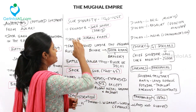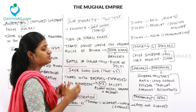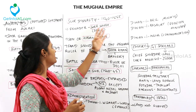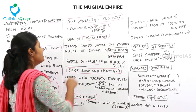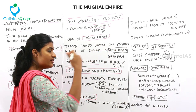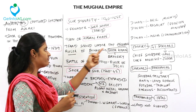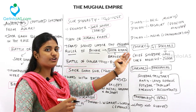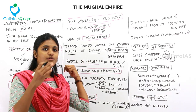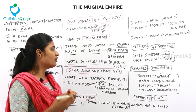The Sur dynasty ruled from 1540 to 1555, about 15 years. It was founded by Sher Shah, whose original name was Farid, son of Hassan Khan. Farid served under the Afghan ruler of Bihar, who gave him the title Sher Khan for his bravery. After the Battle of Chausa in 1539, Sher Khan became the ruler of Delhi.